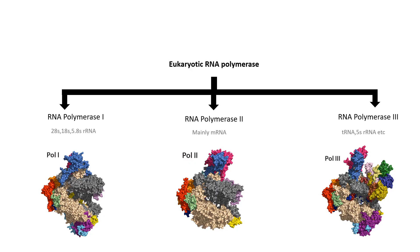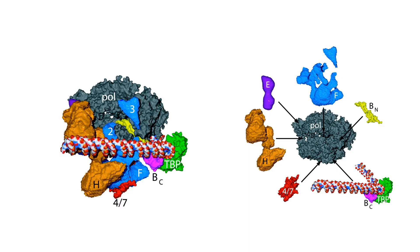The enzyme which transcribes is far more complex in eukaryotes than in prokaryotes. In prokaryotes we have only one type of RNA polymerase, whereas in eukaryotes we have at least three types of RNA polymerase. RNA polymerase II is the key enzyme which transcribes mRNAs, so in this video we will be focusing on Pol II and the mechanism of Pol II-based transcription of mRNAs.